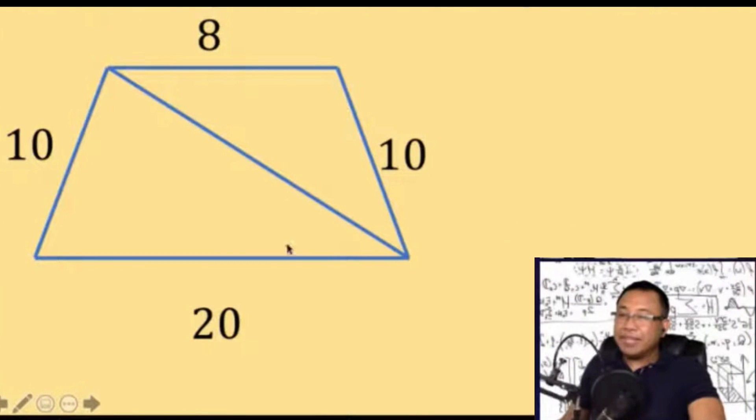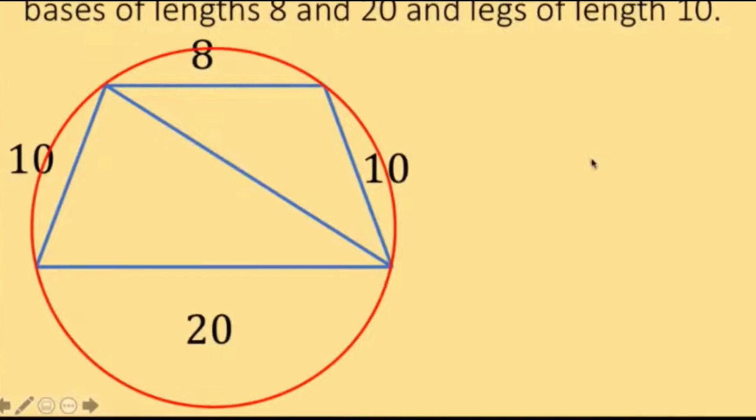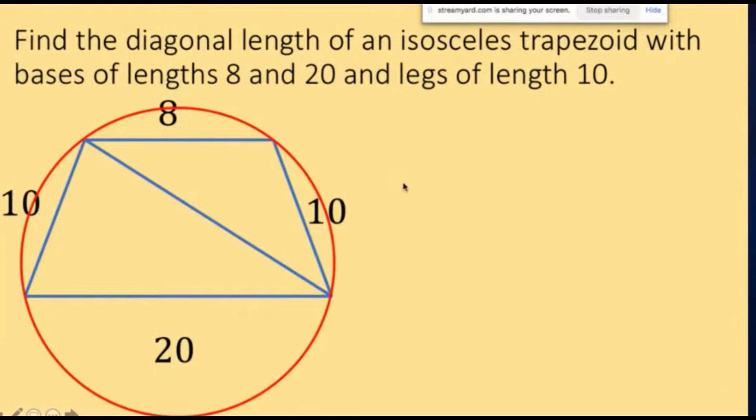In an isosceles trapezoid, the diagonals are equal, and the secret here is that since in this isosceles trapezoid the opposite angles are supplementary, then it can be inscribed in a circle, making this a special kind of quadrilateral.